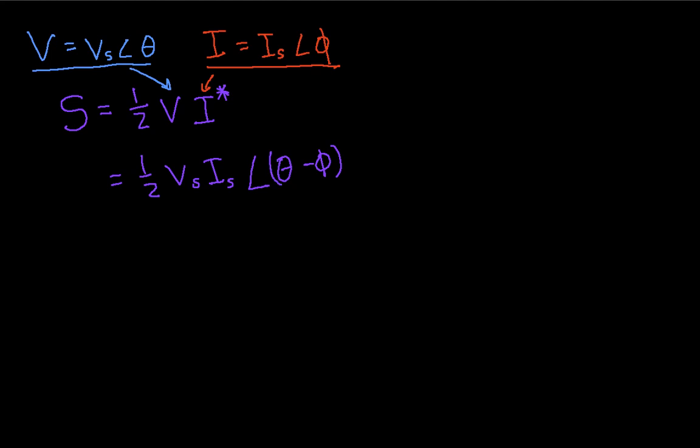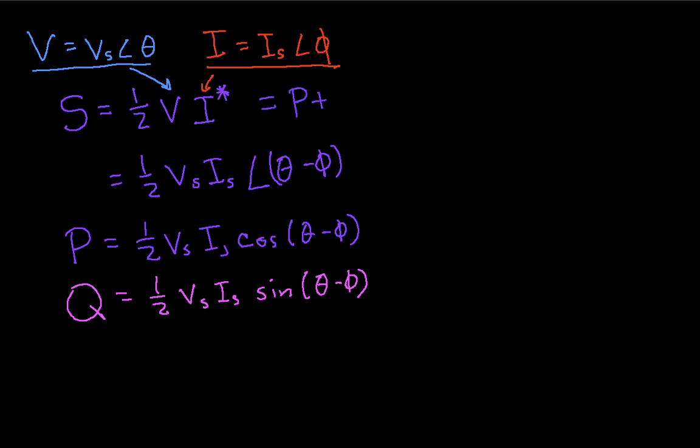So we've seen the theta minus phi again. We've actually seen the one half V S I S. When we computed the average power, that's what we had. So the real part of this, which is the average power, will be one half V S I S cosine theta minus phi, which we've already found. The reactive power, which again is the imaginary part of S, will be one half V S I S sine theta minus phi. So we can basically say then that S is P plus j Q.